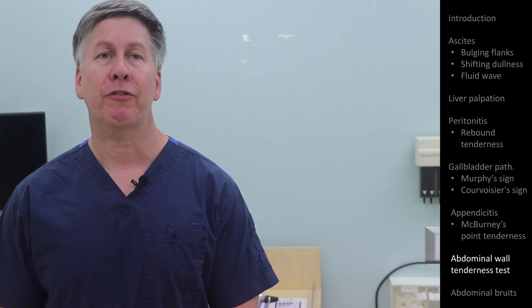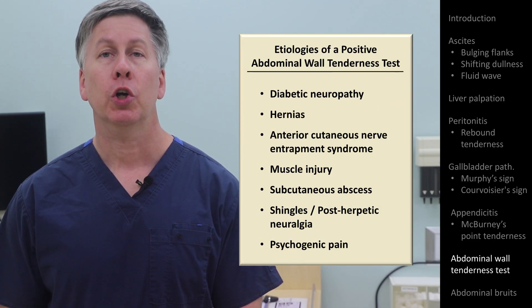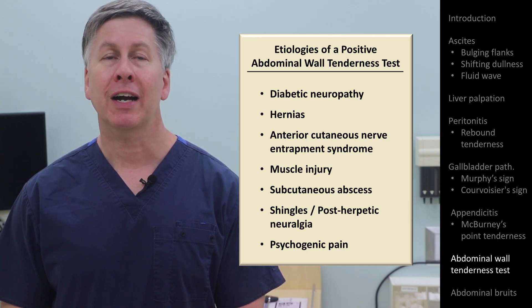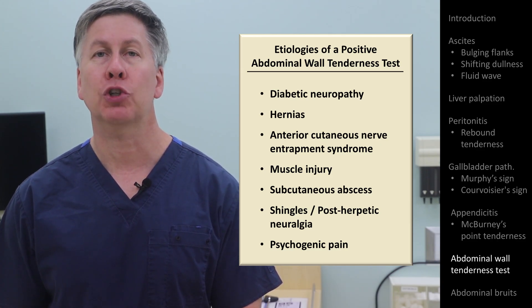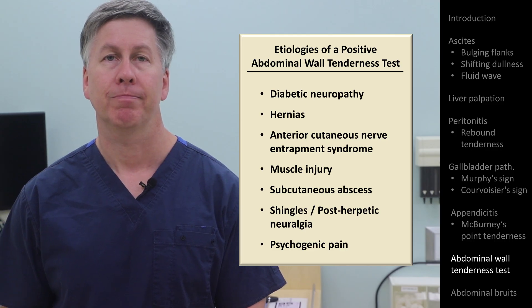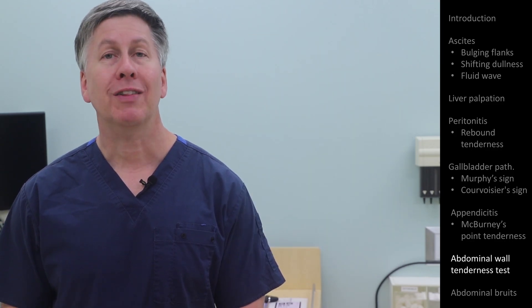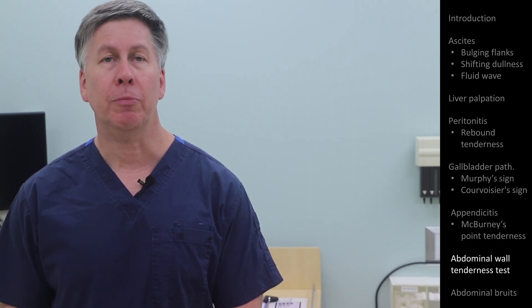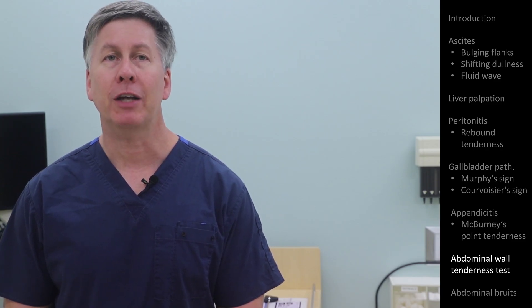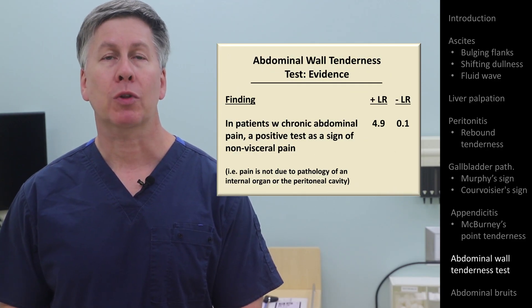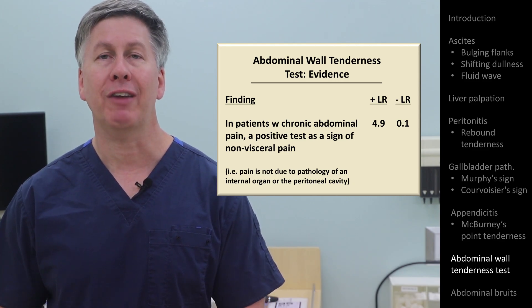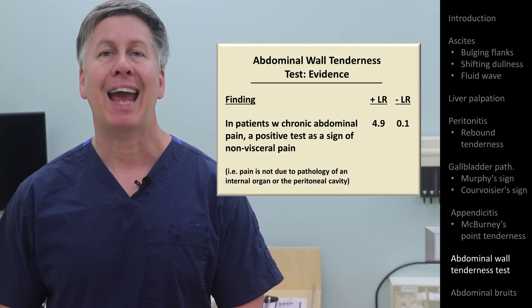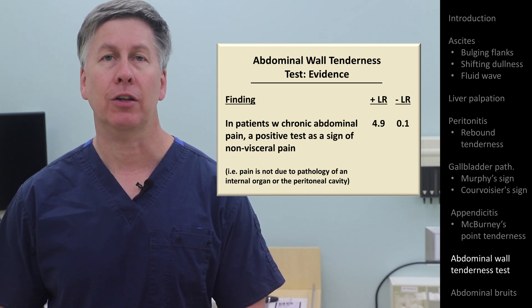Abdominal wall tenderness can be from diabetic neuropathy, hernias, or an under-recognized condition called anterior cutaneous nerve entrapment syndrome. Regarding the evidence supporting the abdominal wall tenderness test, among patients with chronic abdominal pain, a positive test reduces the likelihood of a visceral cause of the pain, and a negative test increases its likelihood.